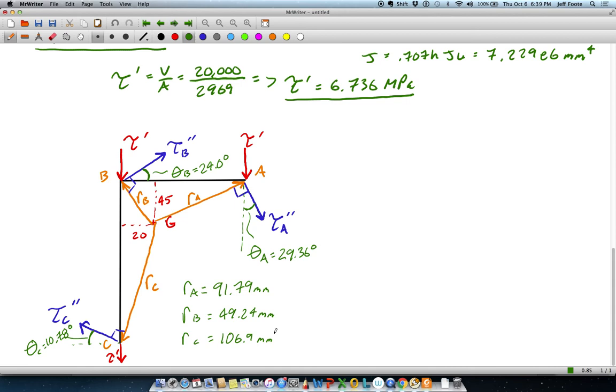Alright. With the position vector lengths, we can calculate the actual magnitude of tau A, tau B, and tau C. We don't actually need the angles yet for that. That'll come in in just a second. So tau A double prime is going to be equal to the moment times RA over J. So 5.6e6, 91.79, and 7.229e6 is J. That gives me 71.11 megapascals.